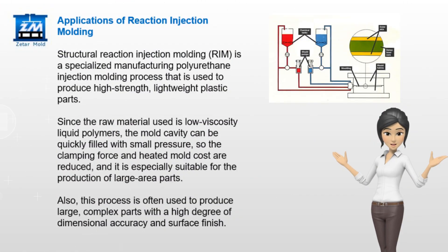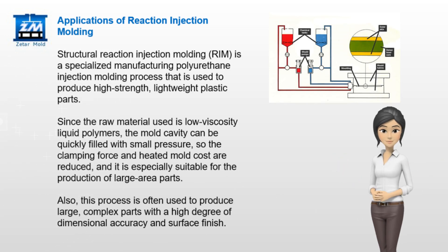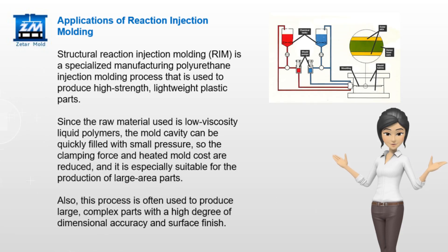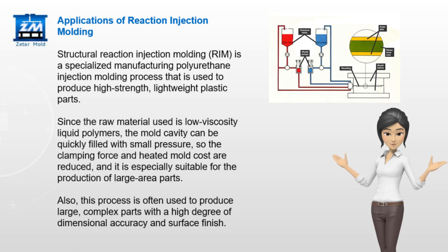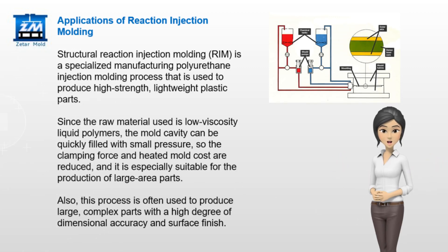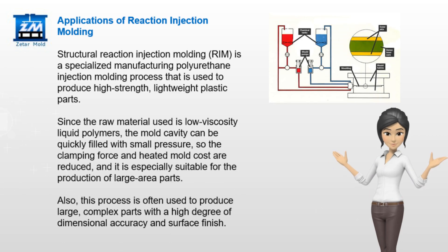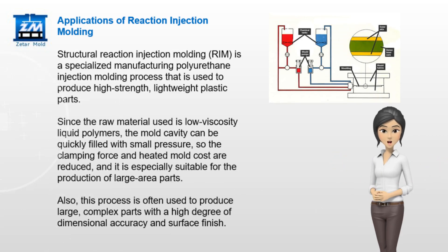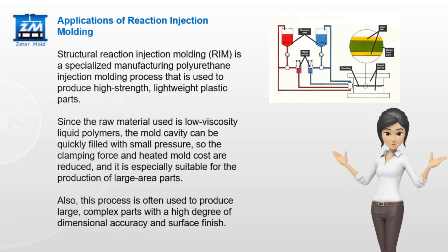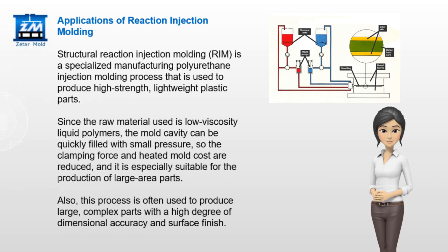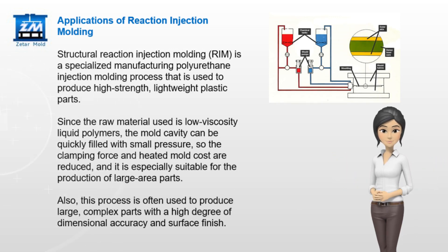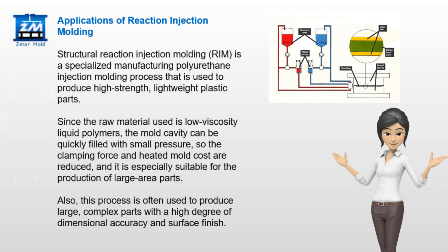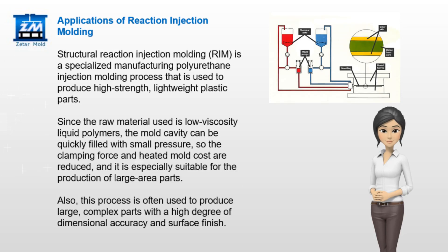Applications of Reaction Injection Molding: Structural Reaction Injection Molding is a specialized manufacturing and polyurethane injection molding process used to produce high-strength, lightweight plastic parts. Since the raw material used is low-viscosity liquid polymer, the mold cavity can be quickly filled with small pressure, reducing clamping force and heated mold costs. This process is especially suitable for producing large-area, complex parts with high dimensional accuracy and surface finish.